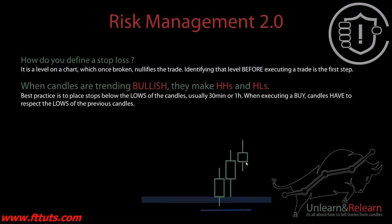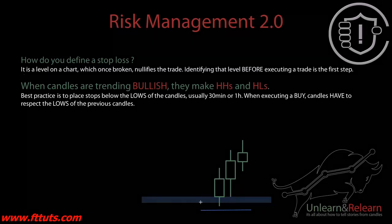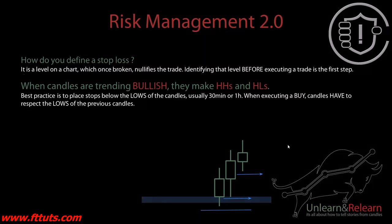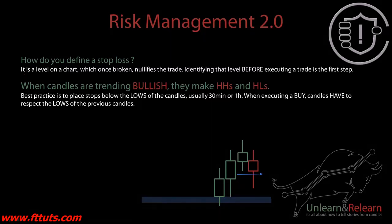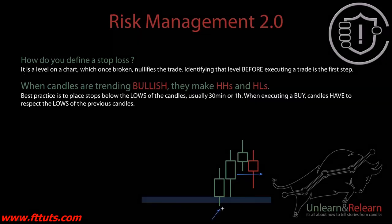Now you're protecting your stop loss down there and expecting candles to continue making higher highs and higher lows. This is where you consider trailing your stop — moving it up below the new lows as candles progress. Once a previous low is broken, that's where you say you made a good decision to trail. Once the low breaks, you're out of the trade, because price may now be starting to reverse.